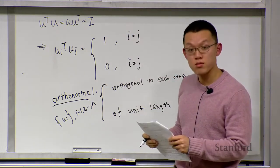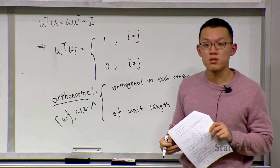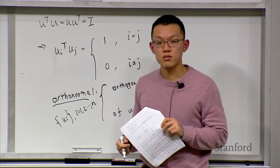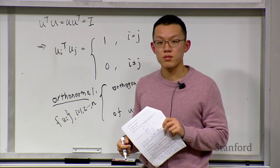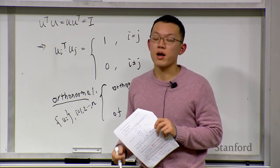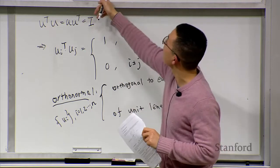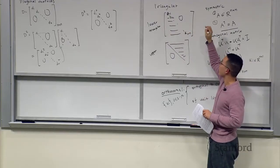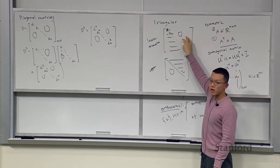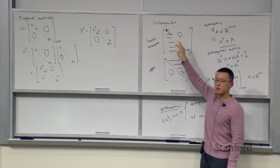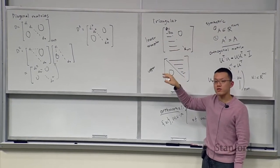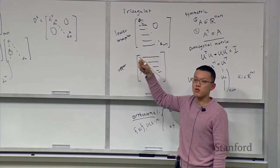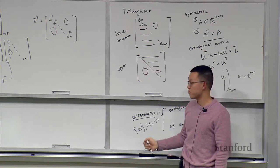A question about triangular matrices: for a lower triangular matrix, the top right corner must be zero, but the diagonal and lower half don't have to be non-zero — you can have zero values there, and it's still a triangular matrix.